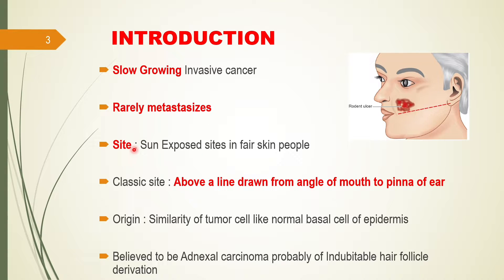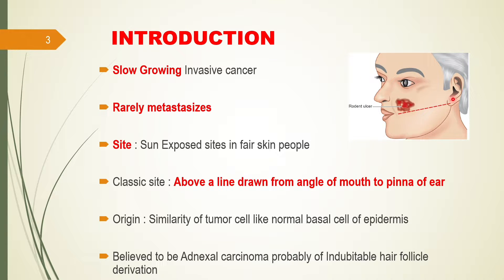Basal cell carcinoma usually develops in a sun-exposed area, sun-exposed skin, and usually develops in fair-skinned individuals. The classical site is a line drawn from the angle of the mouth to the pinna of the ear - basal cell carcinoma usually involves these areas above that line. It is believed to be an adnexal carcinoma, probably because of infundibulum hair follicle derivation, and some think it arises from the basal cells of the epidermis.